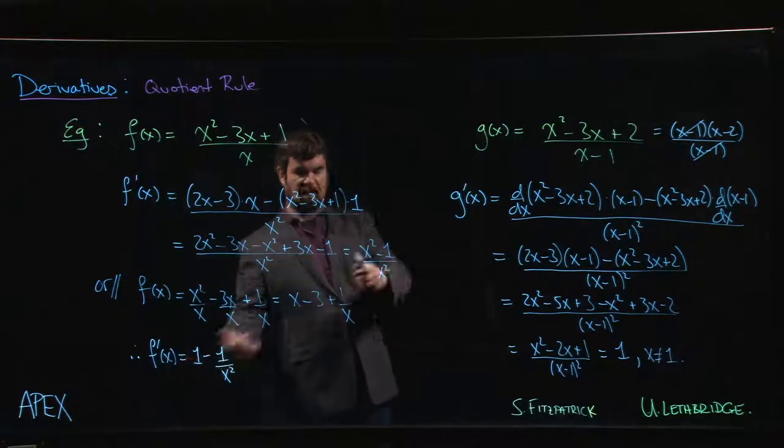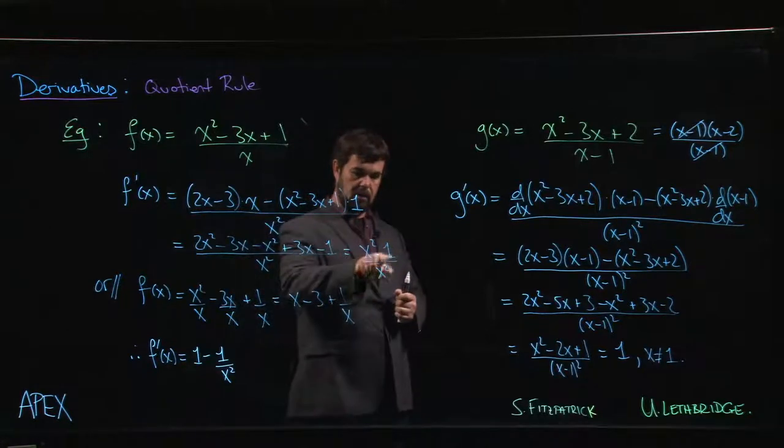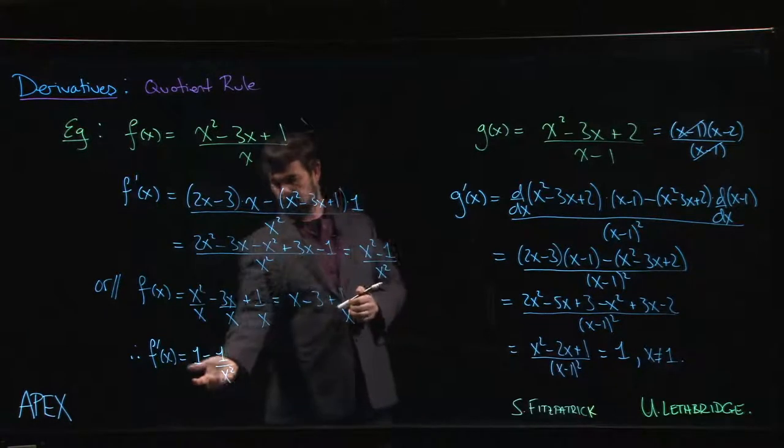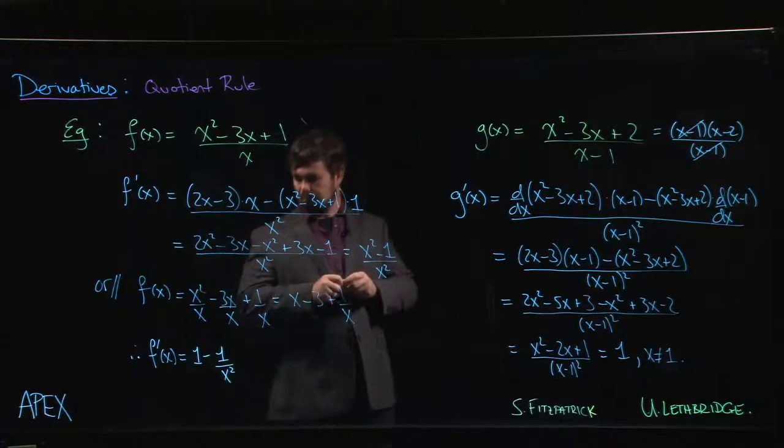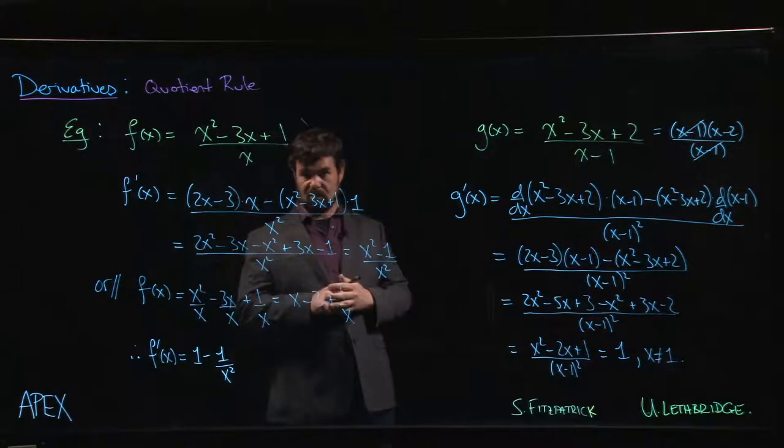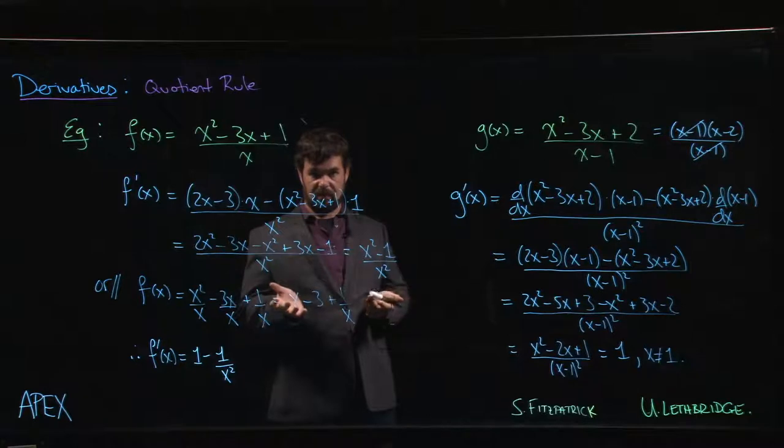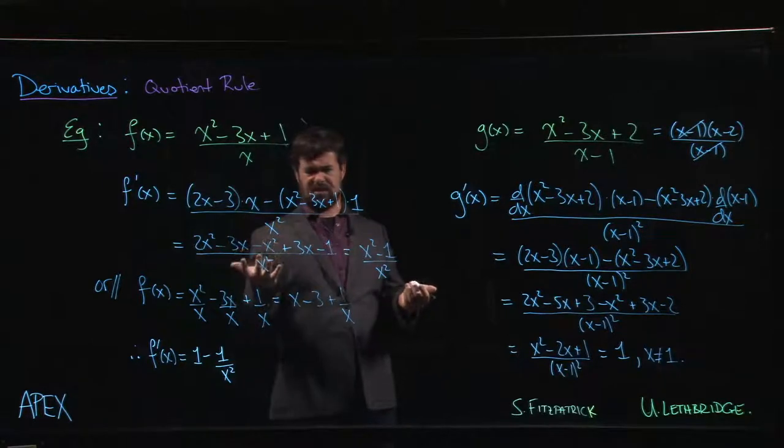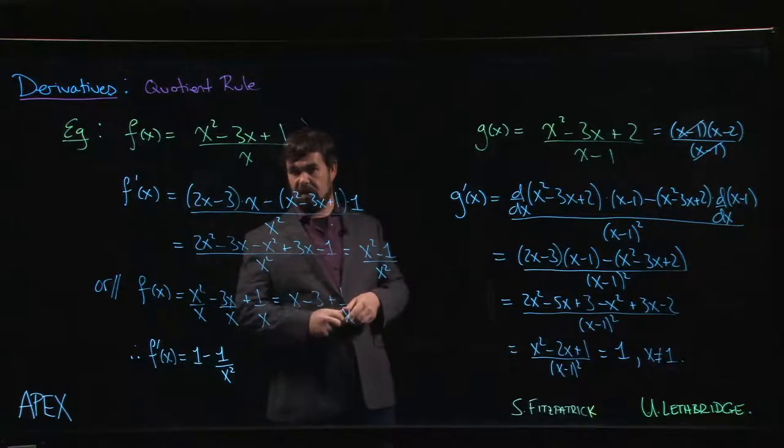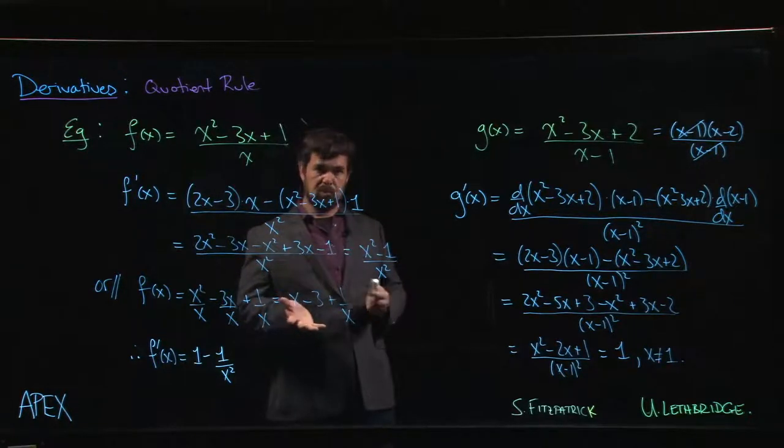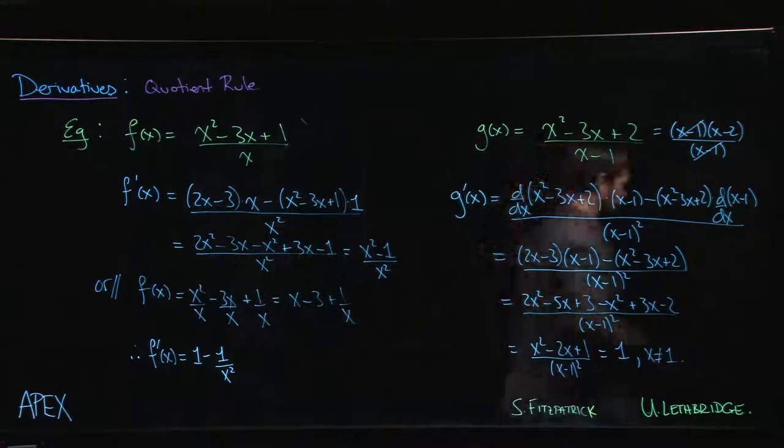And that's the same answer as we have here, because I can divide both of these terms by x squared, and I get the same result. So again, maybe you don't want to use the quotient rule unless you have to. Quotient rule is usually going to give you a pretty messy result. So if you can find a way to do things cleaner, do it that way.